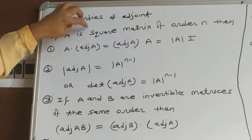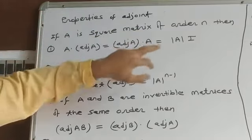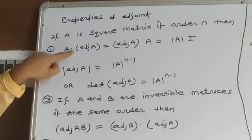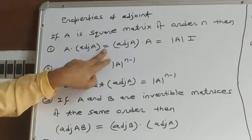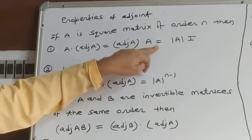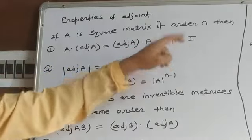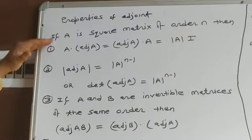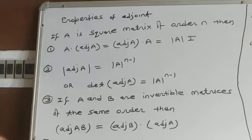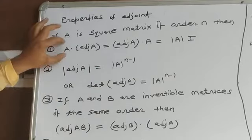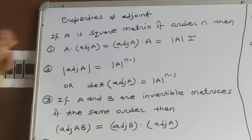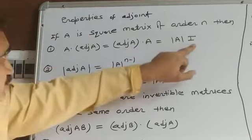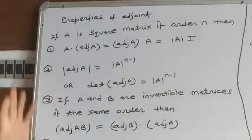If A is a square matrix of order n, then the first property of Adjoint states: A into Adjoint A equal to Adjoint A into A equal to determinant A into I. This is a direct formula and is very important for solving numerical problems.